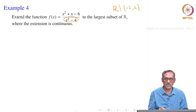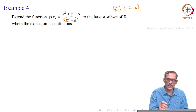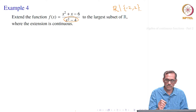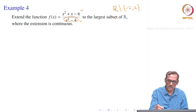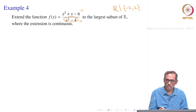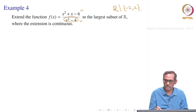So this is the domain. In this domain, is it a continuous function? Yes, it is, because the numerator is a polynomial function and the denominator is a polynomial function. So it is a rational function and it is continuous everywhere in its domain.